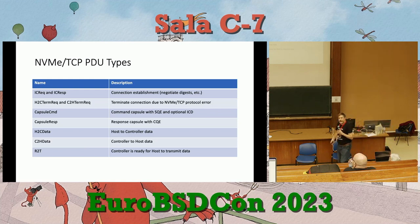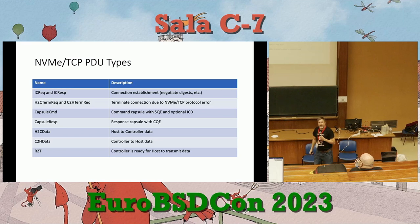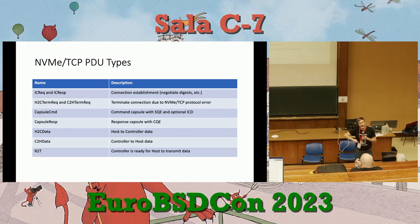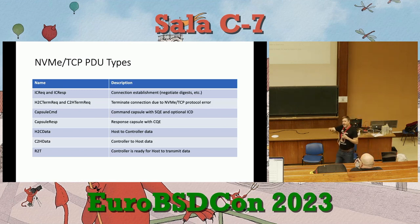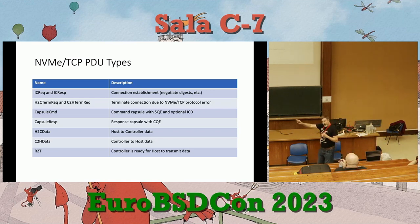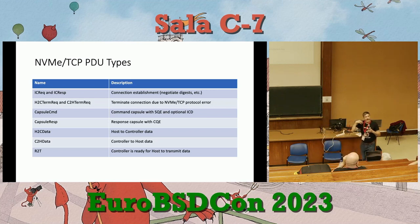The PDU types for TCP include: two for connection establishment and parameter negotiation; two error-reporting PDUs for protocol-level errors; PDUs to send command capsules (containing an SQE) and response capsules (containing a completion); and three PDUs for data management — host-to-controller data (for writes), controller-to-host data (for reads), and ready-to-transmit, which lets the controller throttle when it wants more data from the host. All data IO when not using in-capsule data is initiated by the controller side.